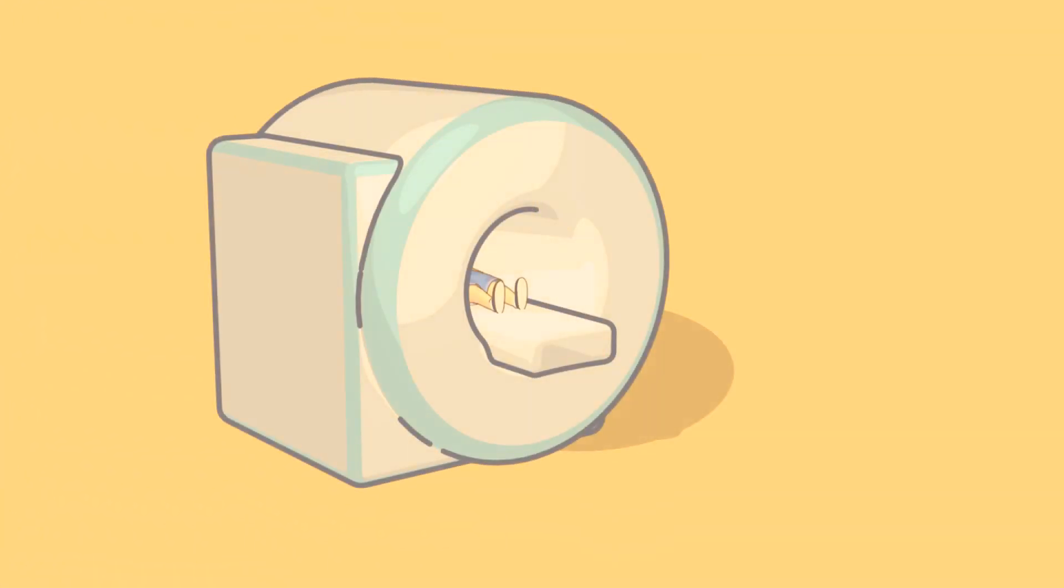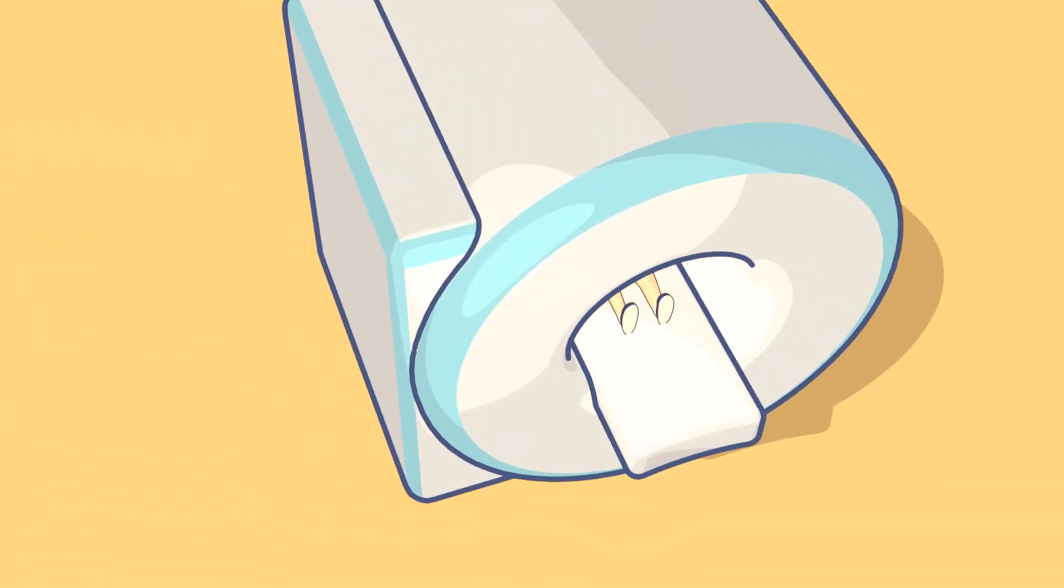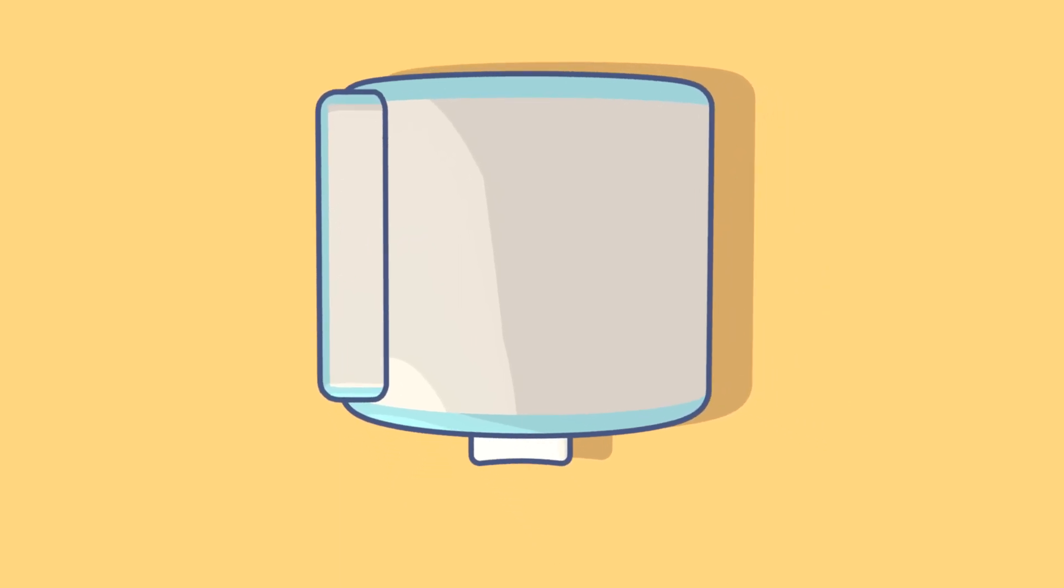At the most basic level, an MRI scanner is a giant magnet and generates its own magnetic field, which we can call B0.